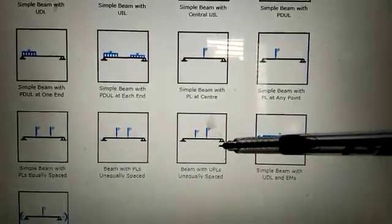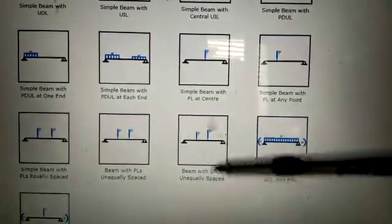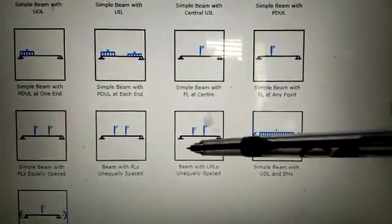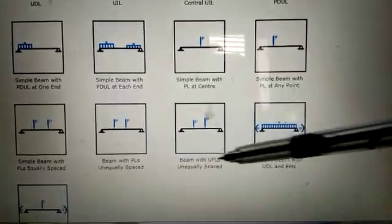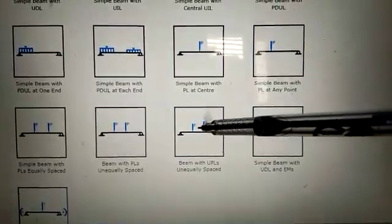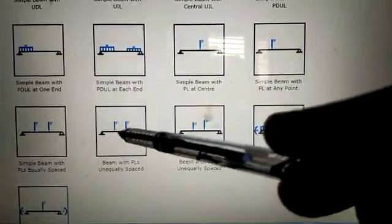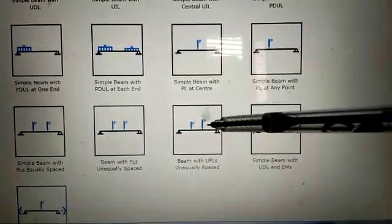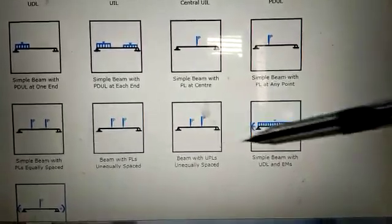Here also, the point loads are with different nature of load. That is, the amount of load also varies. Here, the load amount is p. Here, the amount is different. Suppose this is small p, this is large p.